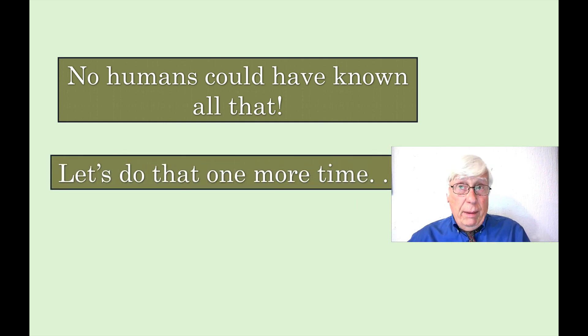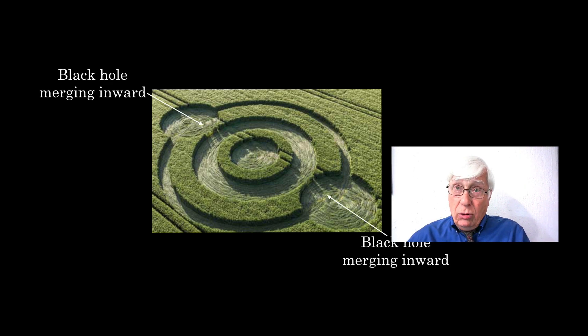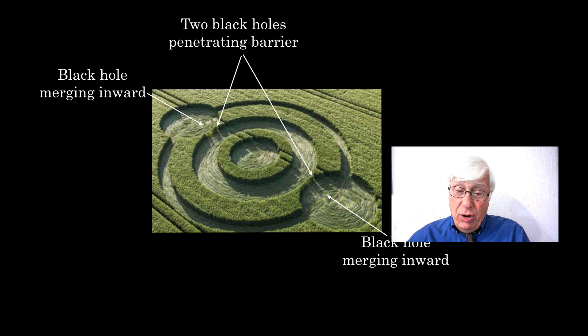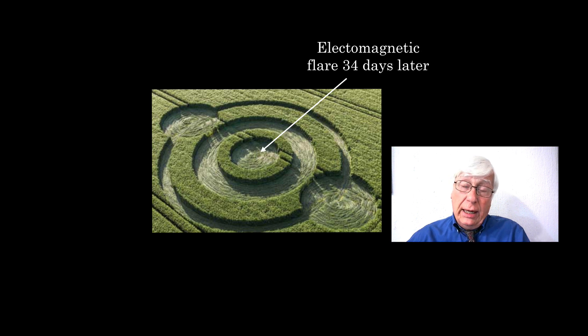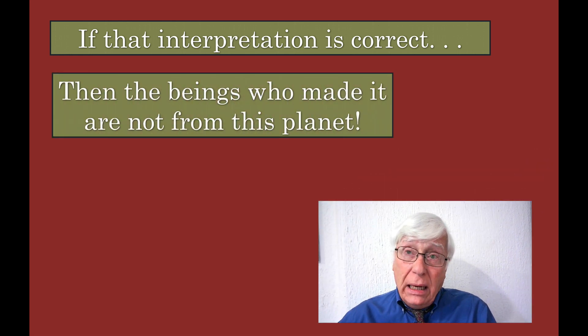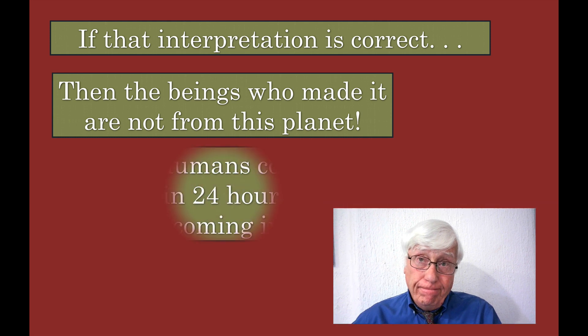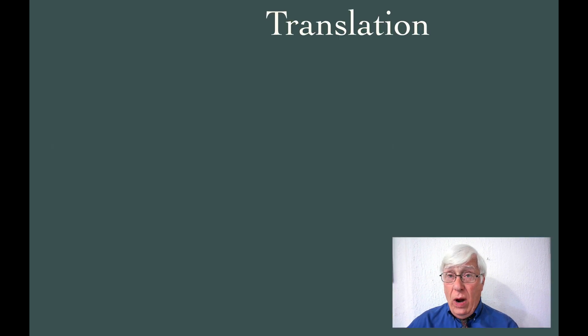So I'm going to do this a couple times, just to make sure it sinks in. Because it took me a while to get it to sink in. The outrageous conclusion is this. If this crop circle interpretation is right, then let's review what that is. Two black holes merging towards the center, penetrating this very thin barrier, forming a larger black hole that's 84% larger than the previous two black holes. And then an electromagnetic flare 34 days later. If that is correct, no human beings could have known all that on May 22, 2019. Sorry.